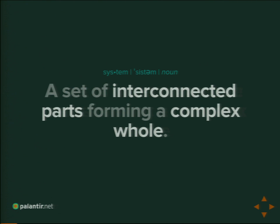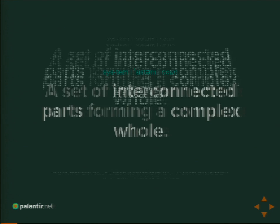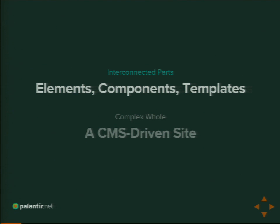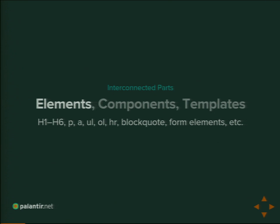What is a system? A system is a set of interconnected parts forming a complex whole—individual pieces that we assemble into a larger vision. In design, this generally consists of elements, components, and templates. Those are the interconnected pieces we assemble. Elements are your basic HTML: your headers, block quotes, paragraphs, forms. That's your lowest-level atomic piece that you design.